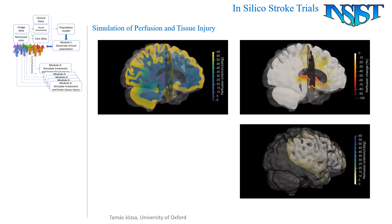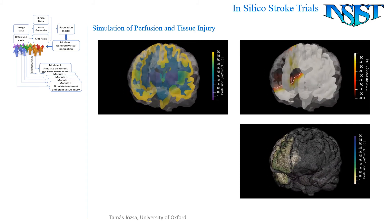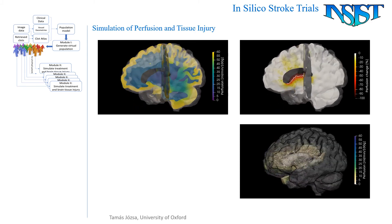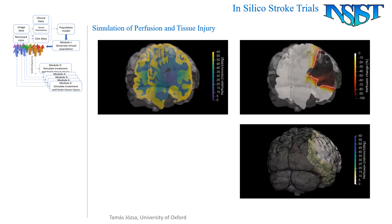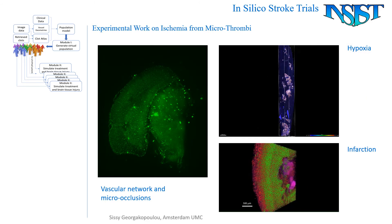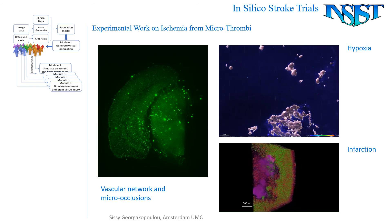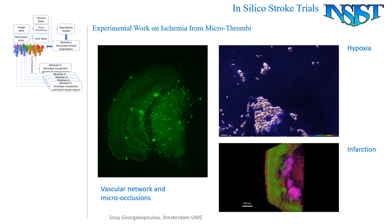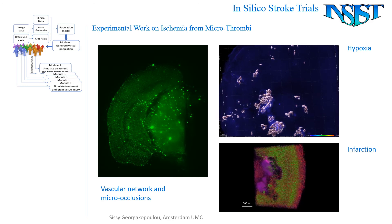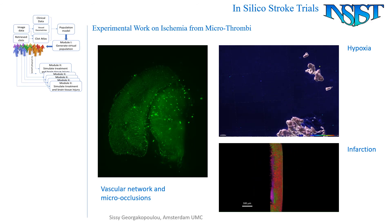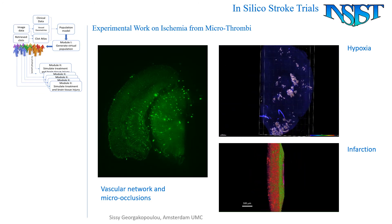The models are run for each individual virtual patient, with their own characteristics, choice of treatment, and timing of treatment. Experiments on rodents are performed that provide parameter estimates for tissue ischemia, anoxia, and final infarction. This includes the role of microthrombi released during the thrombectomy procedure. Such microthrombi lodge in the small vessels, causing small but sustained flow interruption.